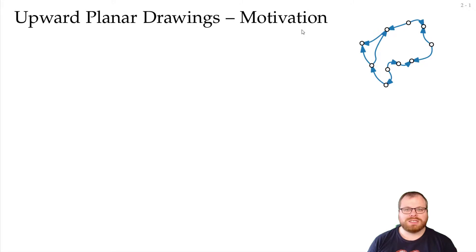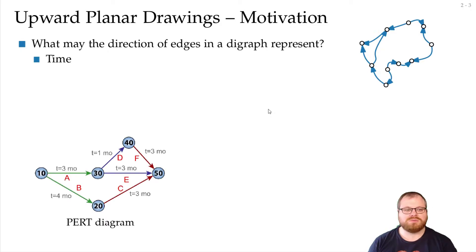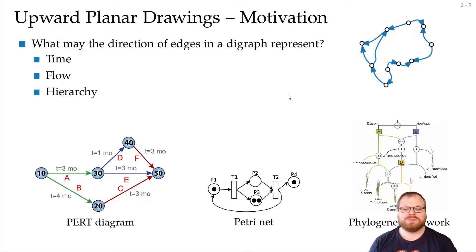If we have a directed graph, then our directed edges usually want to represent something. That can be many things. For example, it can represent time, like in a program evaluation and review technique diagram, or it can represent flow, like in a Petri net. It can represent a hierarchy, like in phylogenetic networks, and many more.